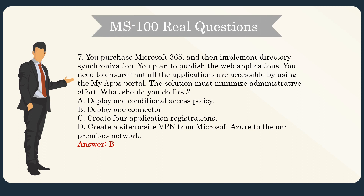Question 7. You purchase Microsoft 365 and then implement directory synchronization. You plan to publish web applications. You need to ensure that all the applications are accessible by using the MyApps portal. The solution must minimize administrative effort. What should you do first? A. Deploy one conditional access policy. B. Deploy one connector. C. Create four application registrations. D. Create a site-to-site VPN from Microsoft Azure to the on-premises network. Answer: B.